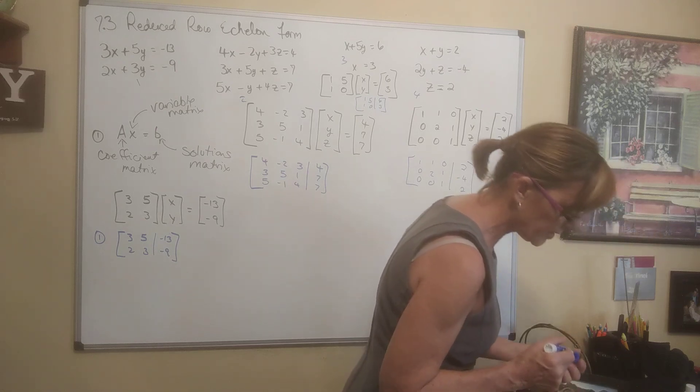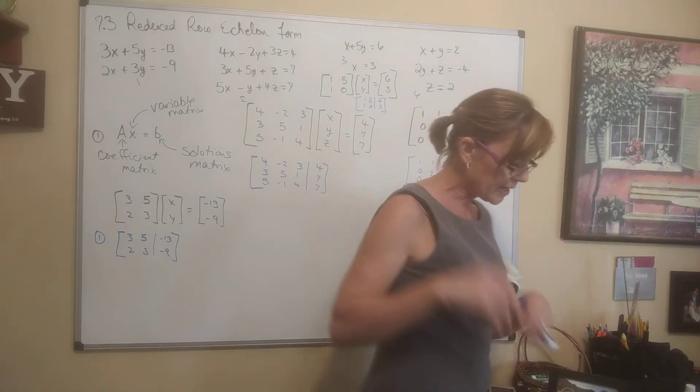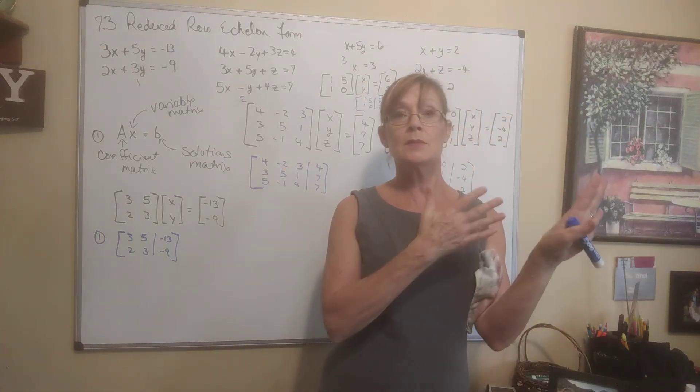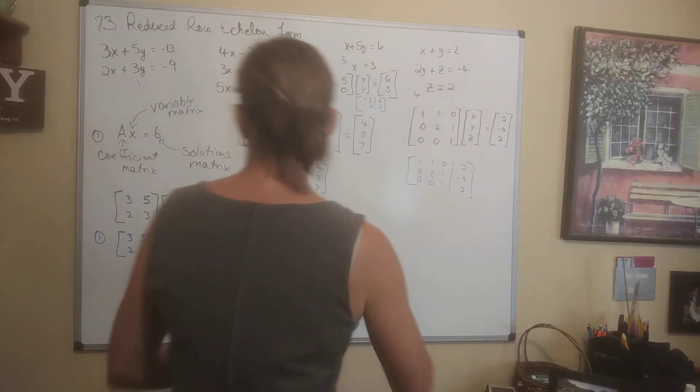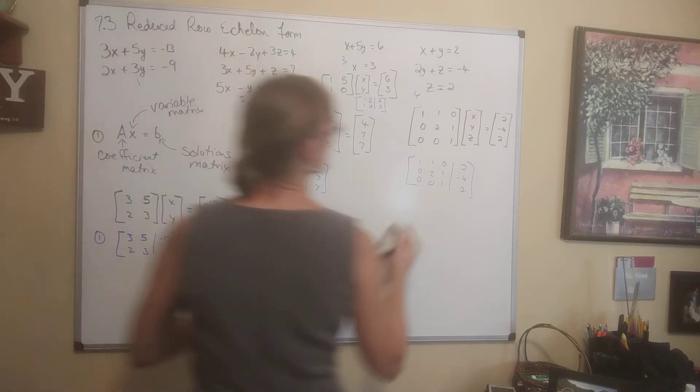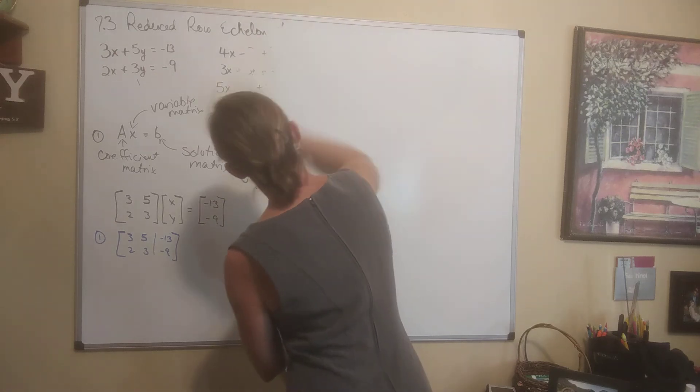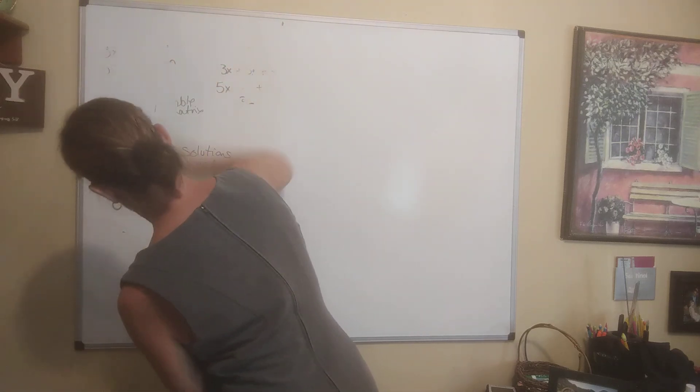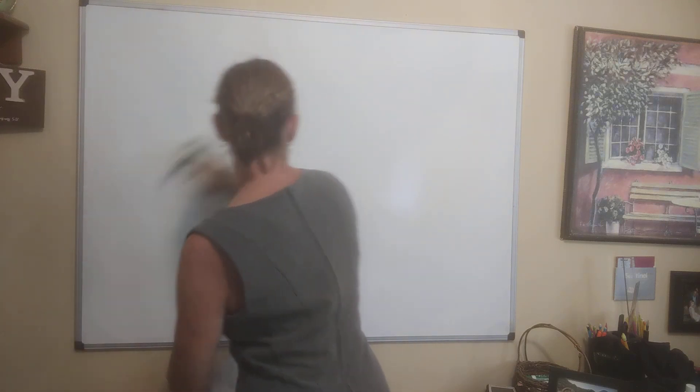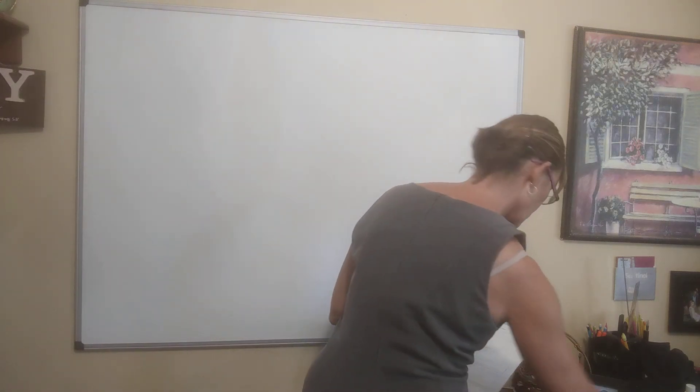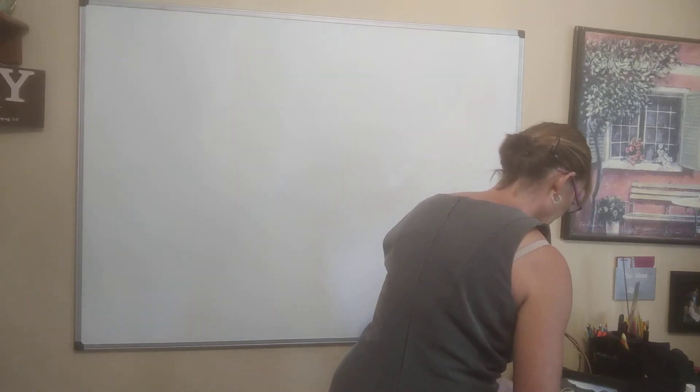Now we are ready to do number 3. The systems of equations associated with each augmented matrix. So number 3, they give us an augmented matrix, 2 of them, and they say write the system of equations that's with it. So let's do that. I think I'm done with all those guys. So I'm going to erase all this.